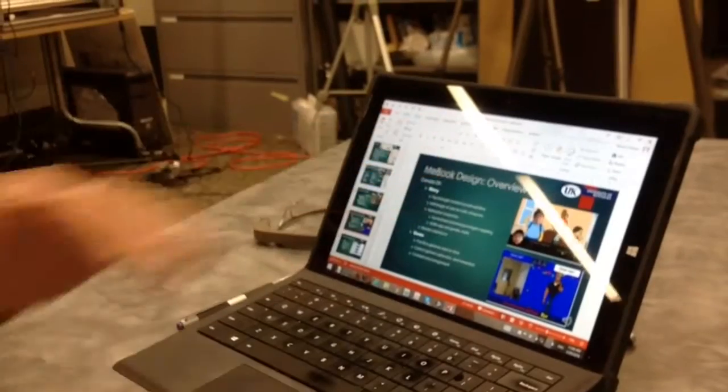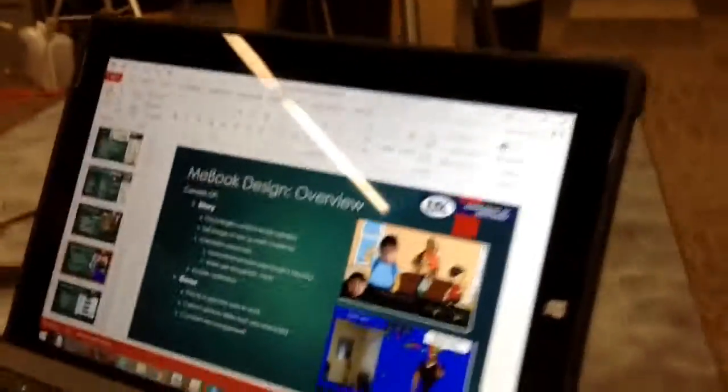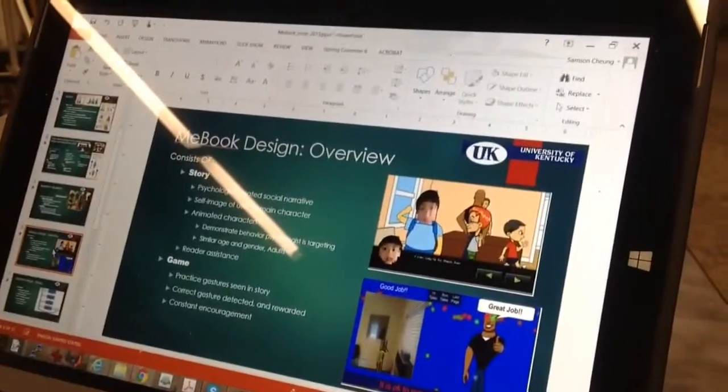The first component is a social story or social narratives, which is in the form of a story that talks about how acceptable social behaviors should be manifested in day-to-day living. The one that we focus on for this design is greeting behaviors.